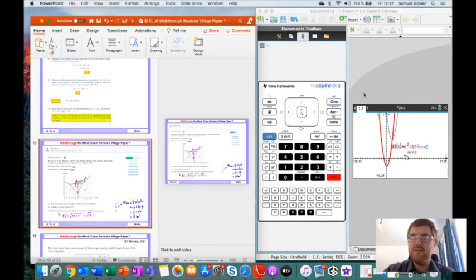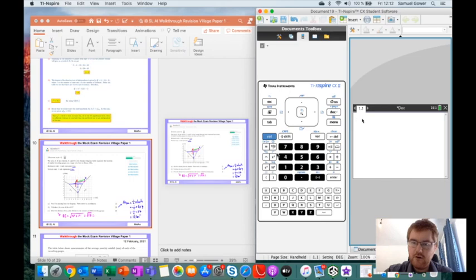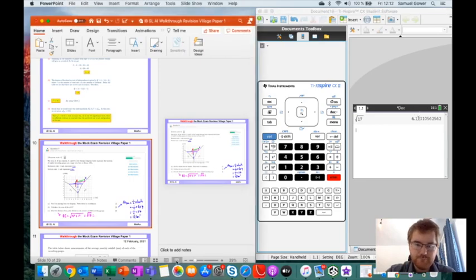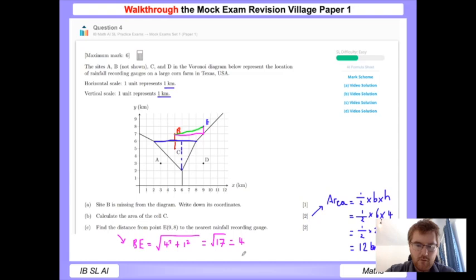So 4 squared is 16, 1 squared is 1, 16 plus 1 is 17. On our graphical calculator we work out the square root of 17. Click control and the x square button, that gives us the square root, type 1 7, and we read off our answer to three significant figures, which will be 4.12.